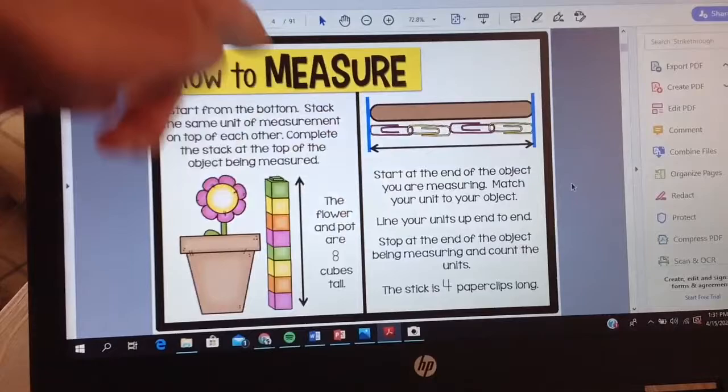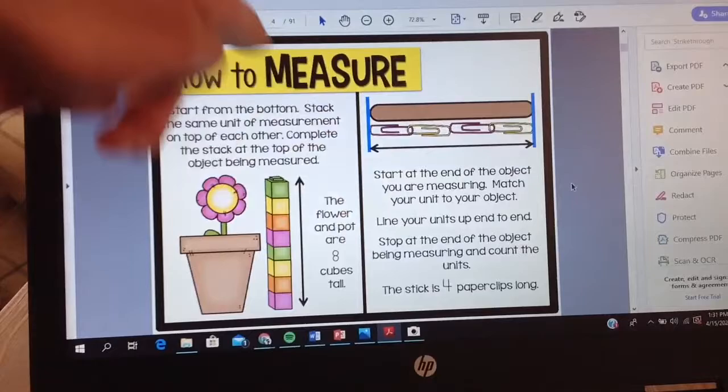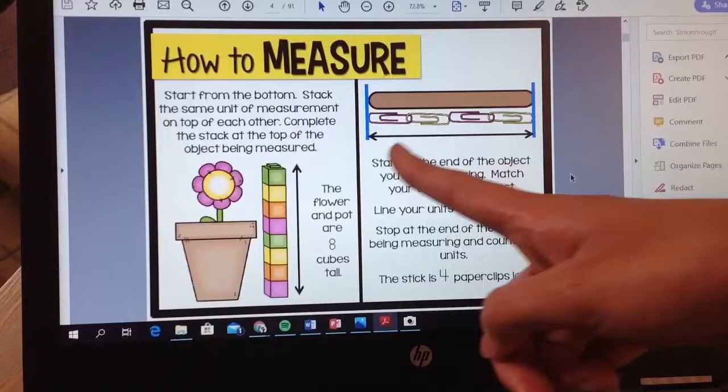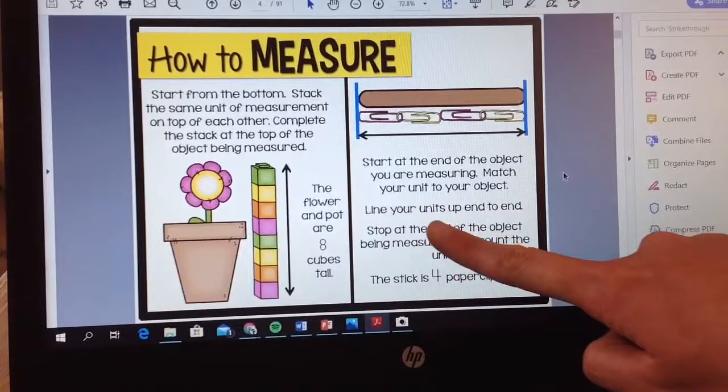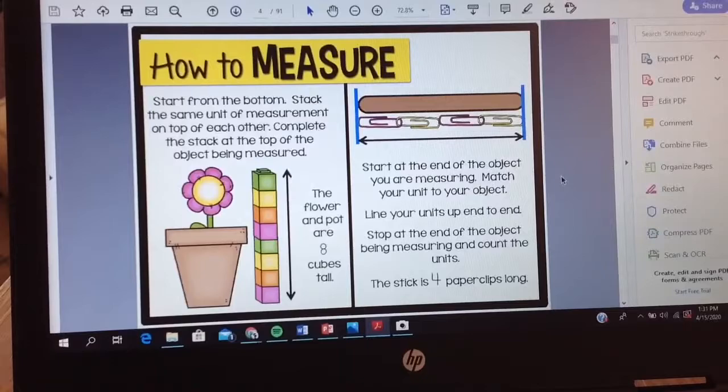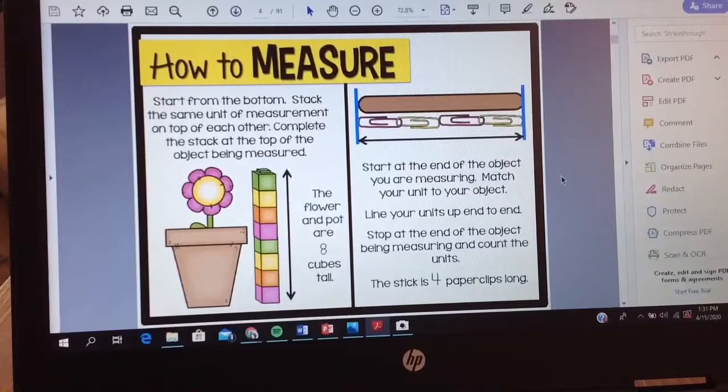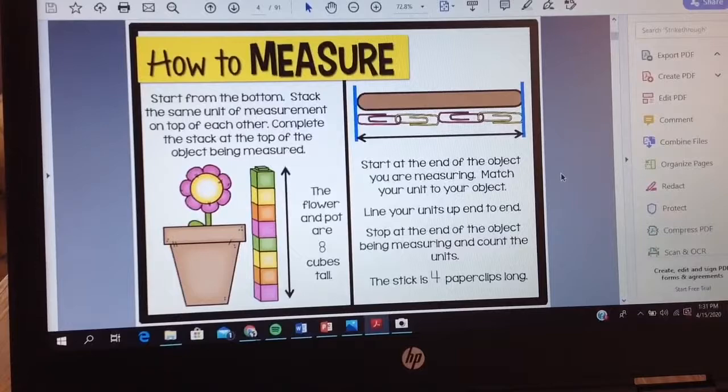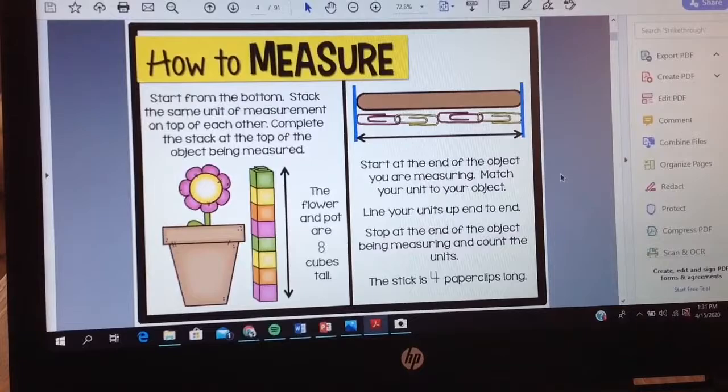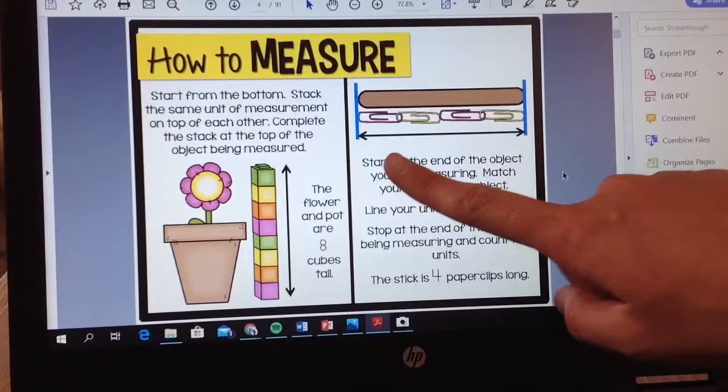Now let's look at the length of this popsicle stick. Again it says start at the end of the object right here. Match your unit to your object. So they put their paper clips right next to the popsicle stick. And then it says line your units up end to end so you notice there are not any spaces between those paper clips. It wouldn't make sense to leave giant gaps within those paper clips. And then it says stop at the end of the object being measured and count the units. So here we see how many paper clips long that popsicle stick is. One, two, three, and four.